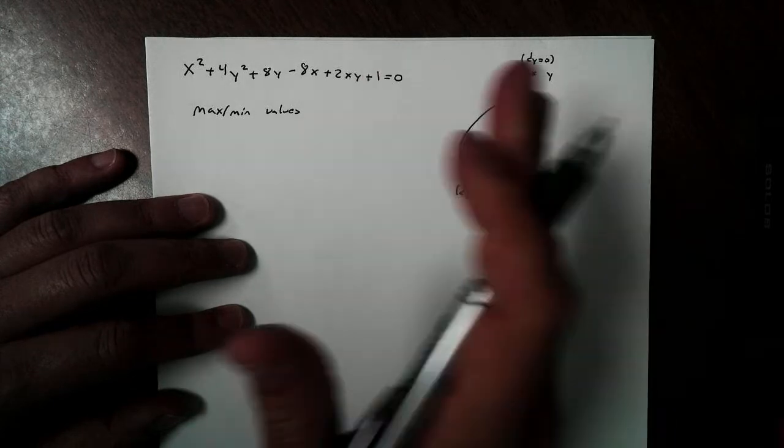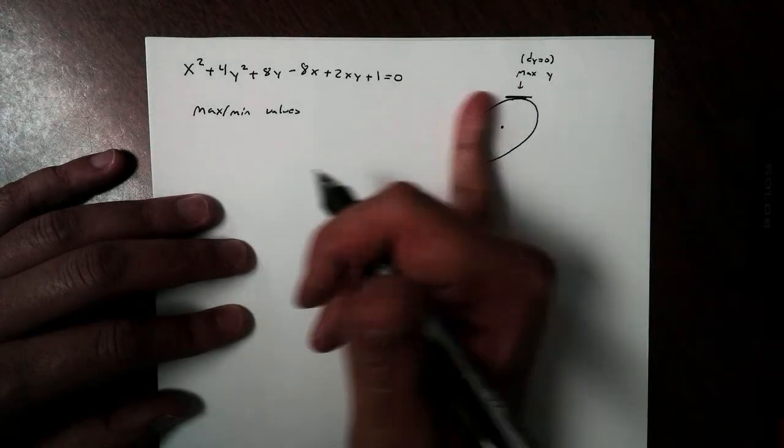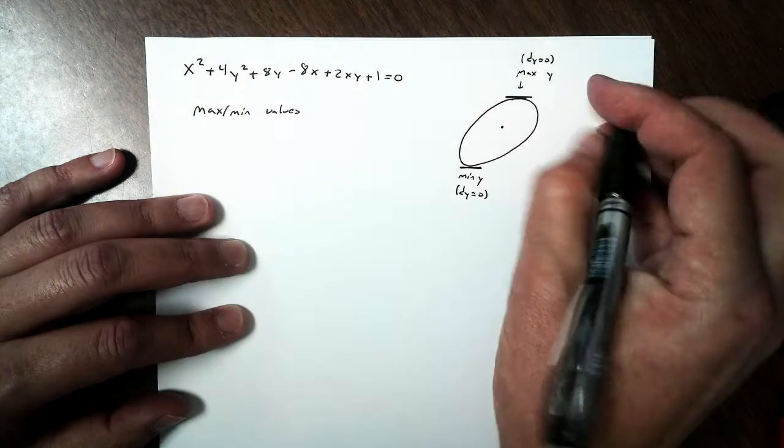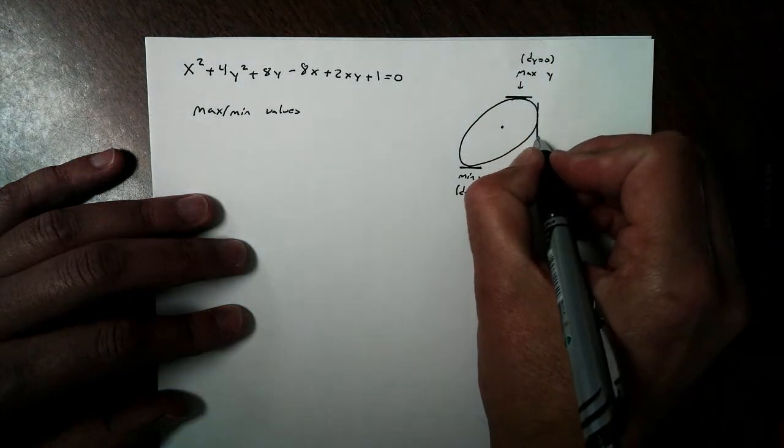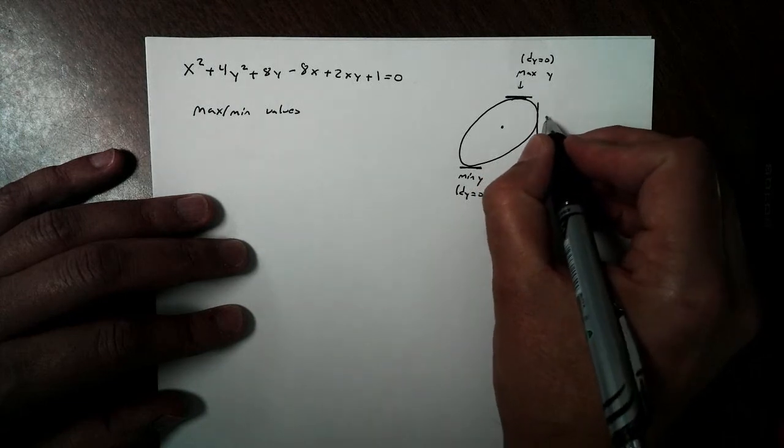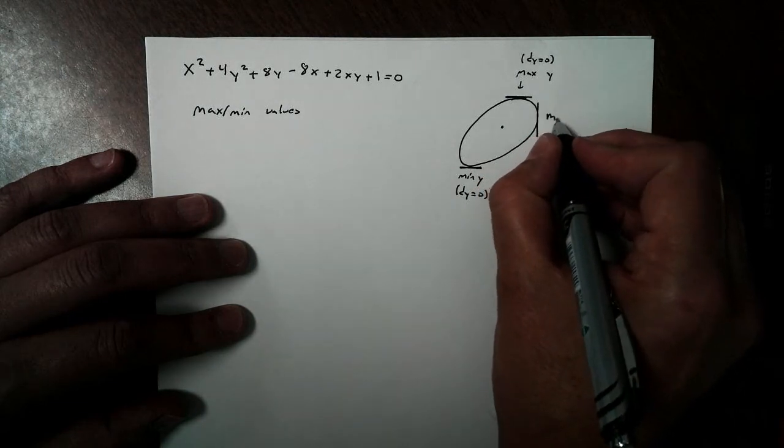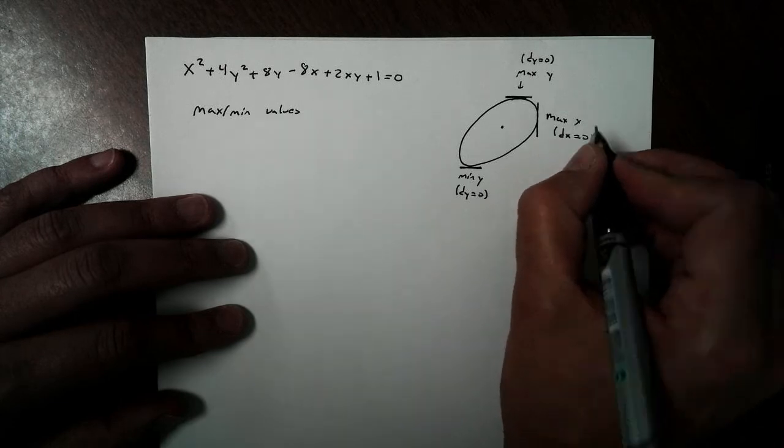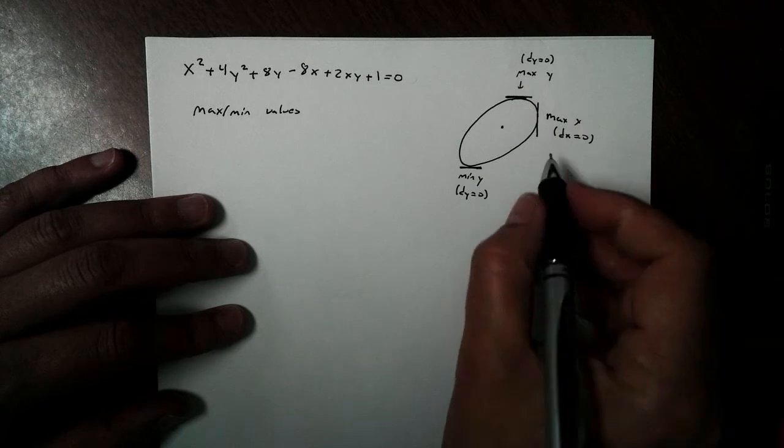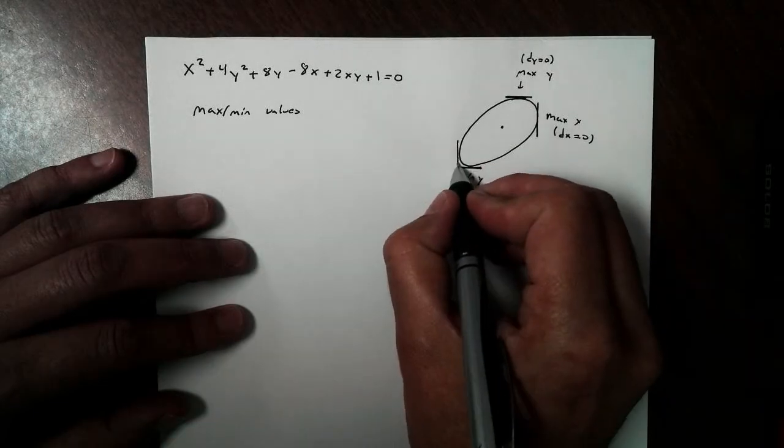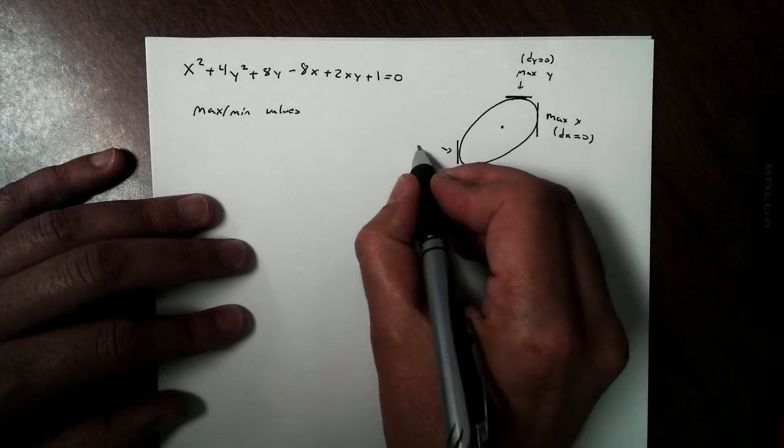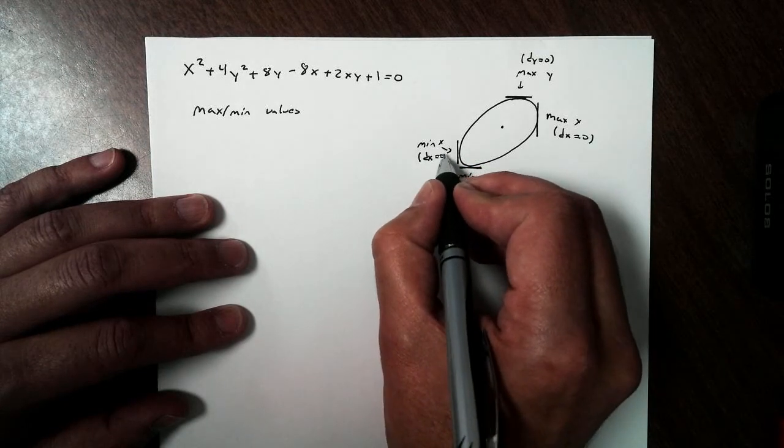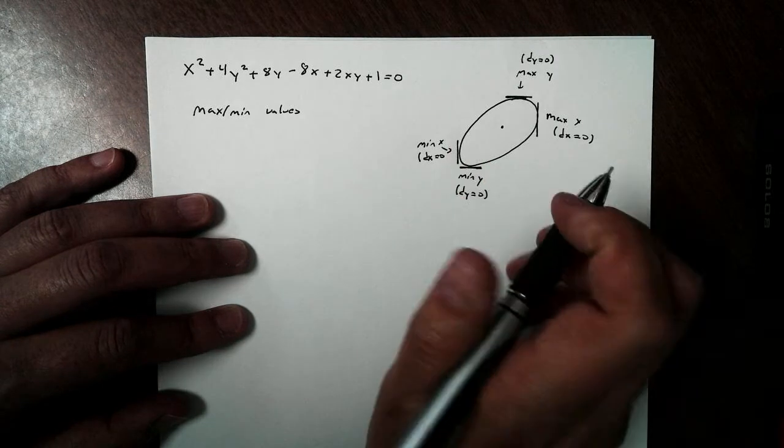But I also have another maximum minimum in terms of my x's. This is why the partials become so important for us. I can find my maximum x value. This would be where my max x would be, where my change in x would be 0. And over here, this is our minimum x value, where a change in x is 0, or where the slope does not exist.